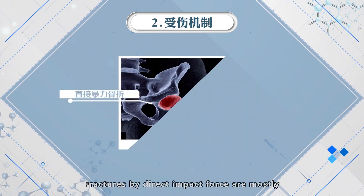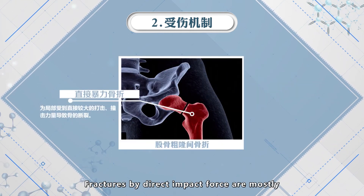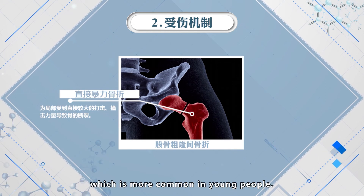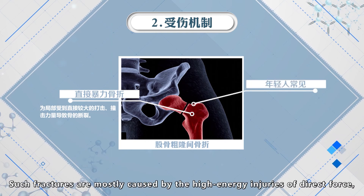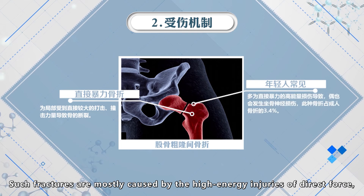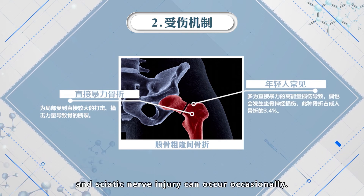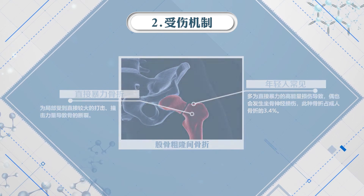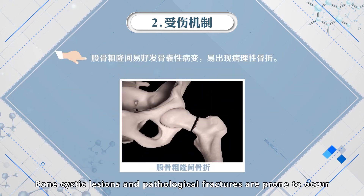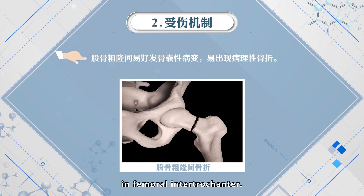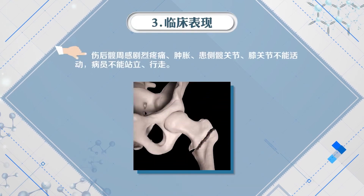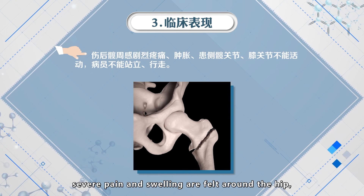Fractures by direct impact force are mostly caused by local direct blow and impact forces, which is more common in young people. Such fractures are mostly caused by high-energy injuries of direct force, and sciatic nerve injury can occur occasionally. This type of fracture accounts for 3.4 percent of adult fractures. Bone cystic lesions and pathological fractures are prone to occur in femoral intertrochanter.